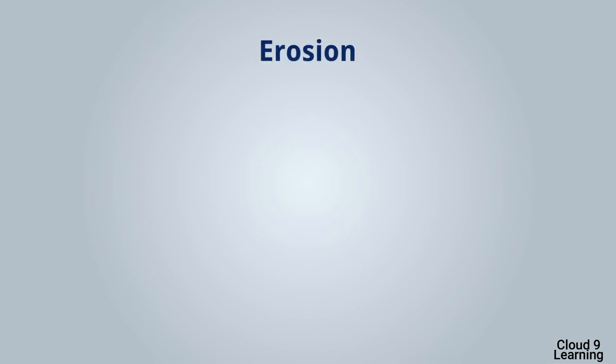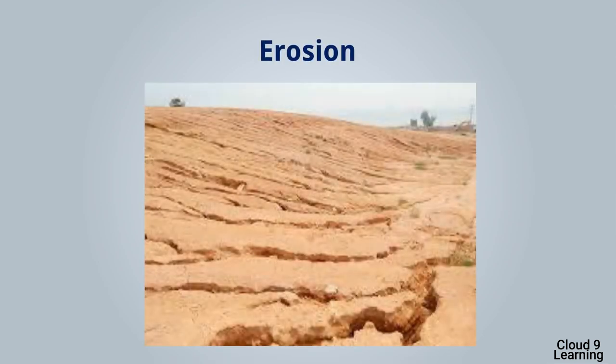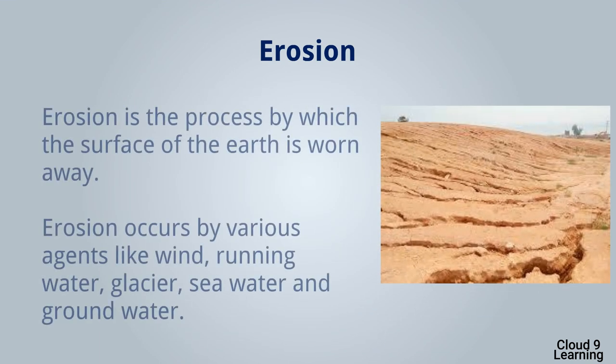Now we will study the last topic of the lesson — erosion. Erosion is the process by which the surface of the earth is worn away. Like weathering and mass movement, erosion is also an external process. Erosion occurs through various agents like wind, running water, glacier, seawater, and groundwater. We will study the agents of erosion and the landforms produced by them in the next lesson.